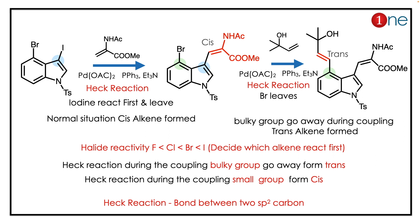So iodine reacts first. Palladium facilitates the coupling, and iodine and the alkene attach to form a new C–C bond with alkene formation. Both groups are cis because of the lesser steric effect.